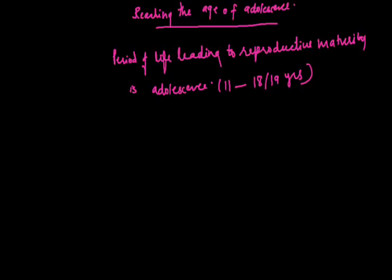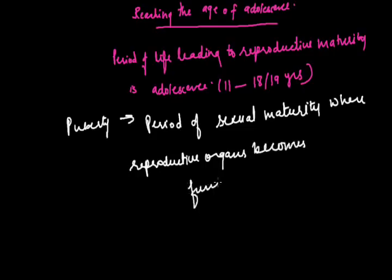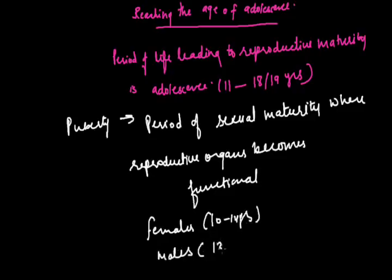There is one more term called puberty. It is a period of sexual maturity when reproductive organs become functional. In human females, age of puberty is 10 to 14 years, and in males the puberty period is 13 to 16 years. It is a transition stage in adolescence.